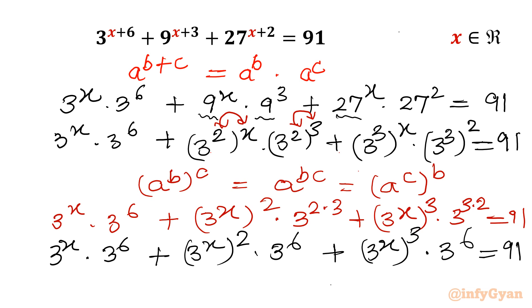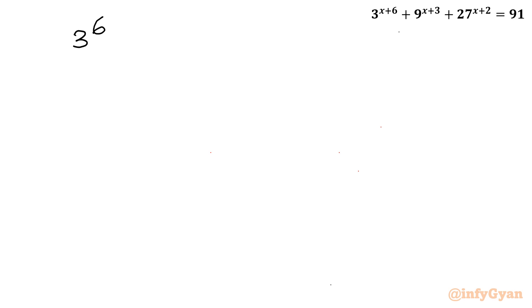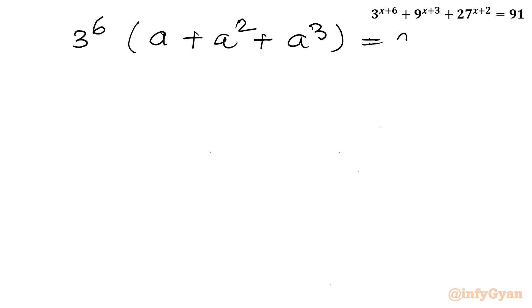Now you can see 3^6 is common. At the same time we can give a substitution. Let 3^x = a. So the equation becomes 3^6 · (a + a^2 + a^3) = 91. Now we have to solve this equation where a = 3^x is our substitution.